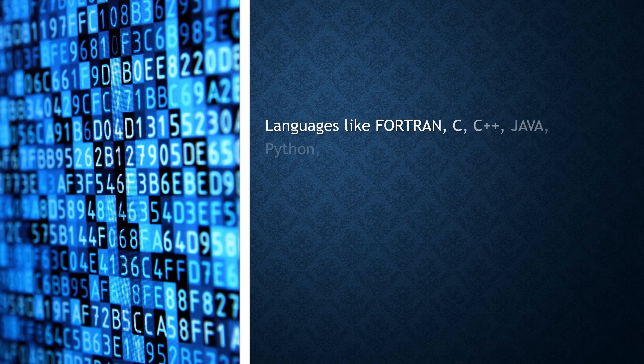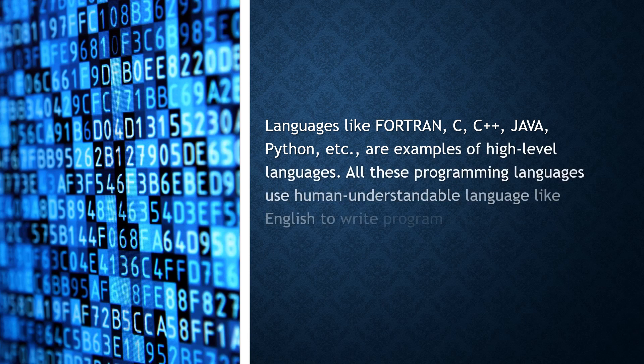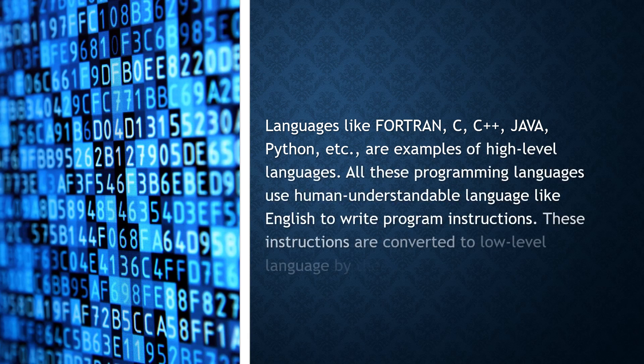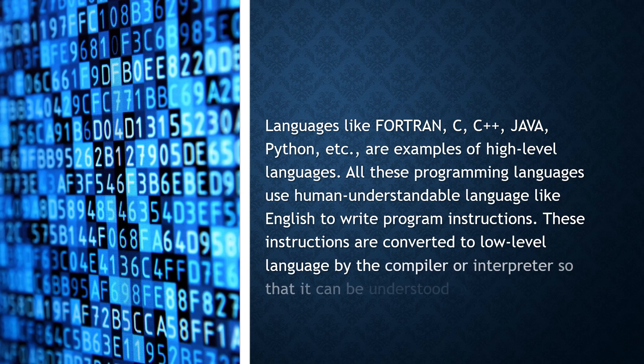Languages like FORTRAN, C, C++, Java, Python, etc. are examples of high-level language. All these programming languages use human-understandable language like English to write program instructions. These instructions are converted to low-level language by the compiler or interpreter so that it can be understood by the computer.